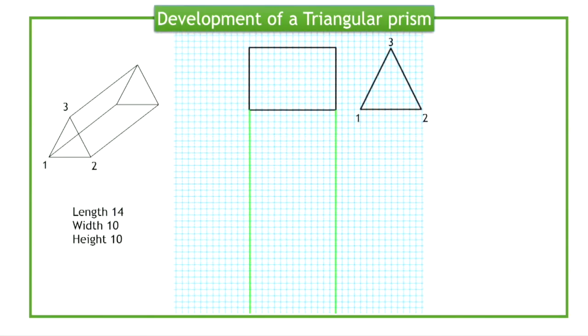The width of the prism has been projected below to draw the rectangular sides. The first side starts at point 1.